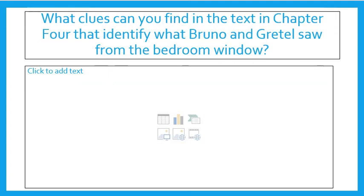Slide 5 says: What clues can you find in the text in chapter 4 that identify what Bruno and Gretel saw from the bedroom window? Re-read the first page of the chapter and it will tell you specifically. What it's trying to get at is, what clues can you find that point to this being a concentration camp?